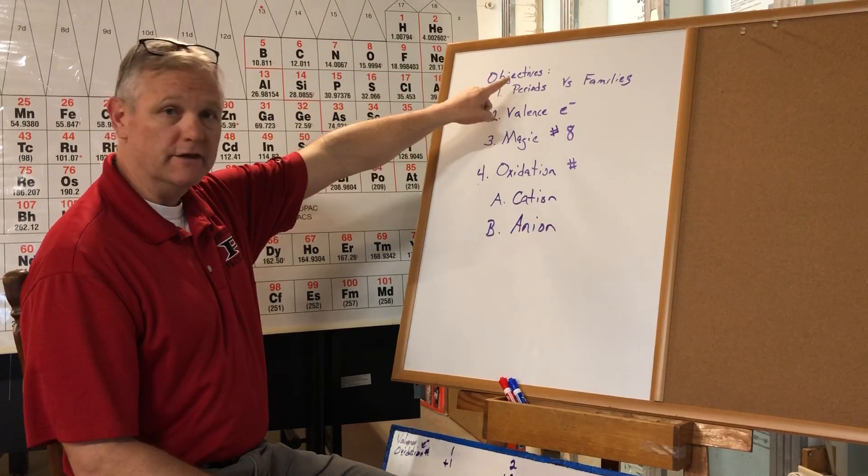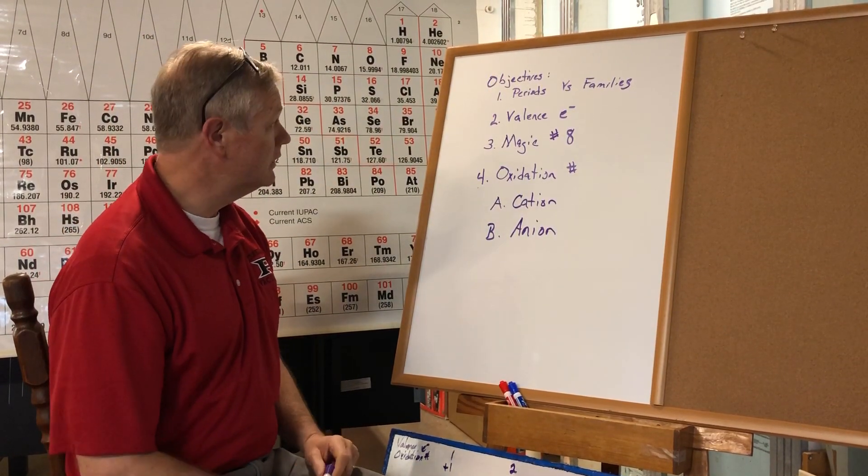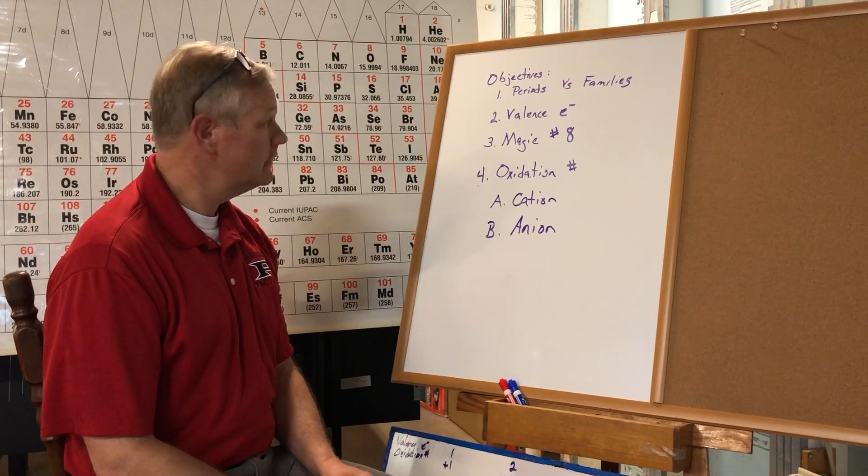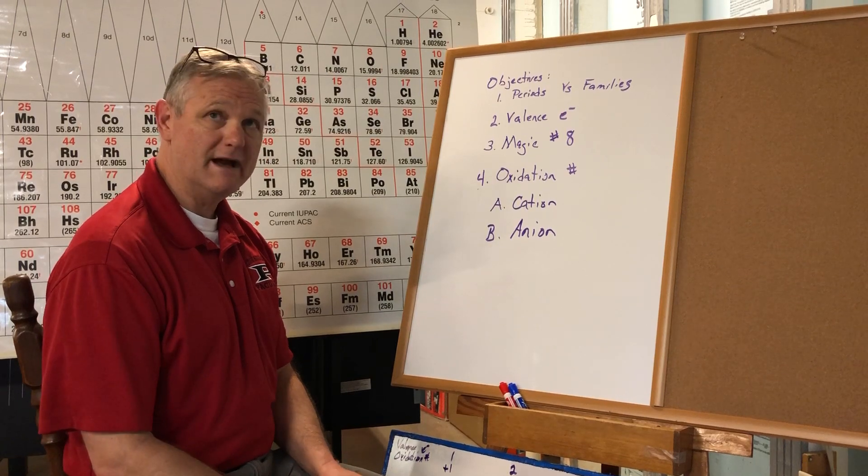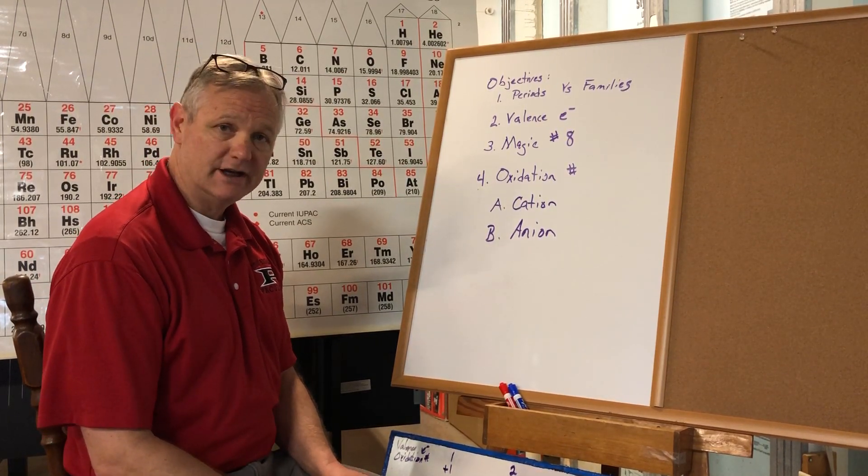The first one is the difference between a period and a family on the periodic table. The second one is what is a valence electron and how to determine valence electrons. The third, what is the magic number eight, and the fourth is going to be oxidation numbers.